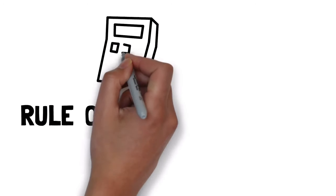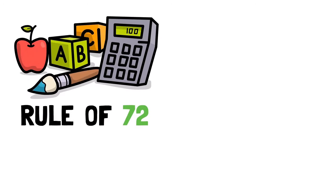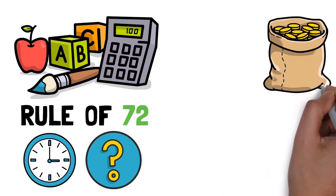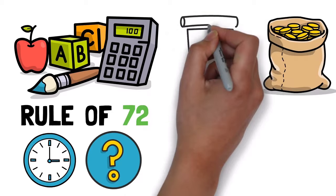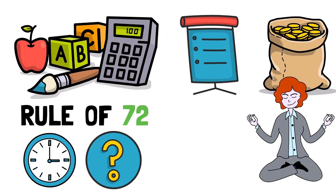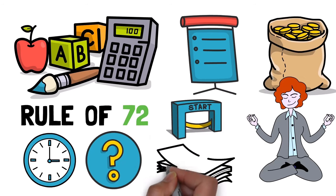All in all, the rule of 72 is a handy mathematical calculation you can use to identify a number of things. This might include determining how long you'll have to wait for your savings to grow or how much money you'll need to make to keep up with inflation. Out of all the things you can use this rule on, the one common thing we learn each time is to be patient. Start your journey towards financial freedom today so that you don't have to be patient for too long.